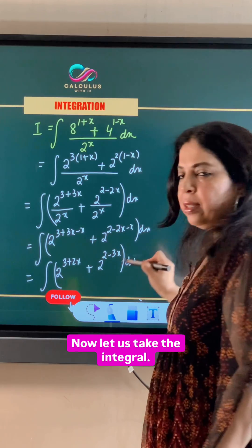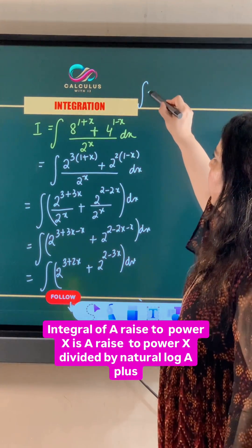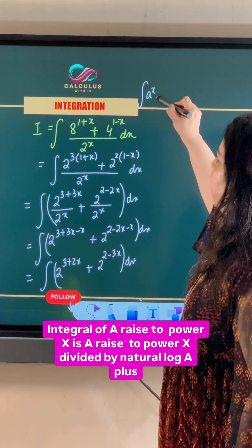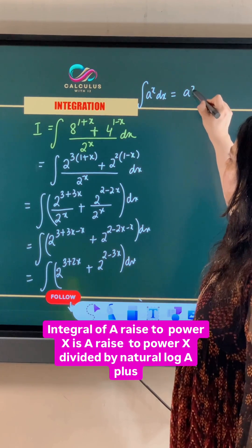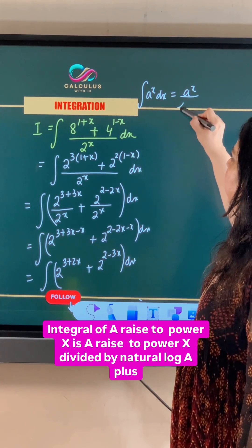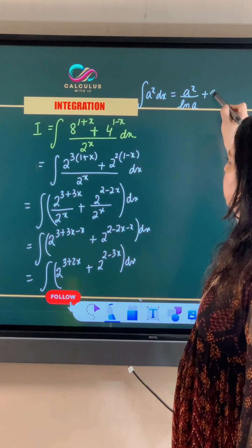Now let us take the integral. The integral of a raised to power x is a raised to power x divided by natural log a, plus C.